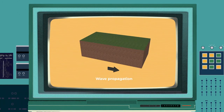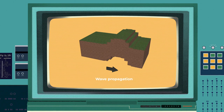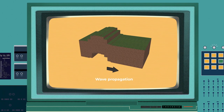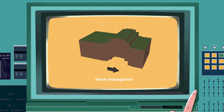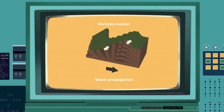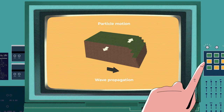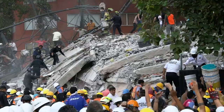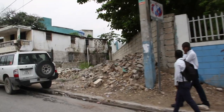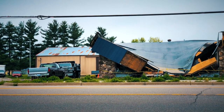S waves, or secondary waves, are shear waves and move in a side-to-side motion. They are the second wave type to be detected. The last waves to be detected are surface waves that roll along the surface of the Earth. They are the most destructive waves as they make the ground move up and down, but they also lose their energy the fastest and cannot travel as far.